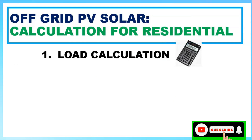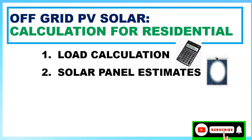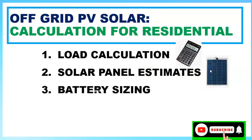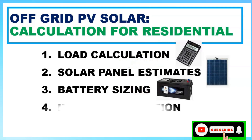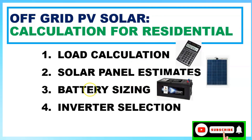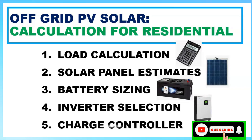Our aim covers five steps: first is the load calculations to determine our consumption; second is the solar panel estimate to determine how many panels we need; third is battery sizing; fourth is the inverter selection — sizing how many kilowatts we need; and last is the charge controller.